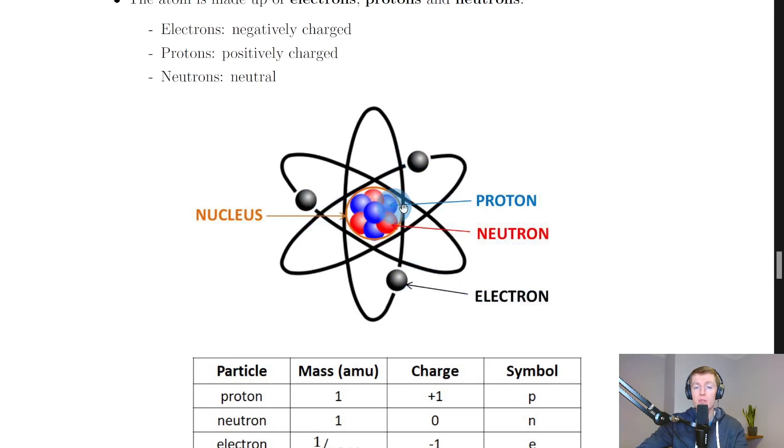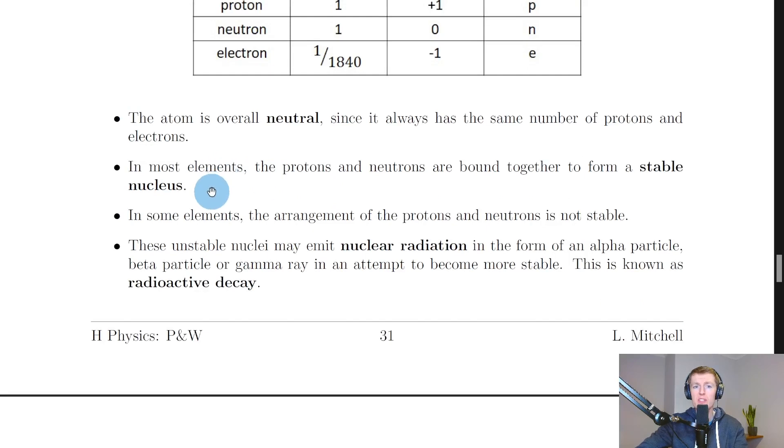For example, in our diagram here we've got four protons shown, and that should match the number of electrons outside of the nucleus. Here you can only see three, but that doesn't mean there couldn't be another one, say, behind the nucleus here that we just can't see in the diagram. In this case, if it was a stable atom, we would have four protons in the nucleus and four electrons outside of the nucleus.